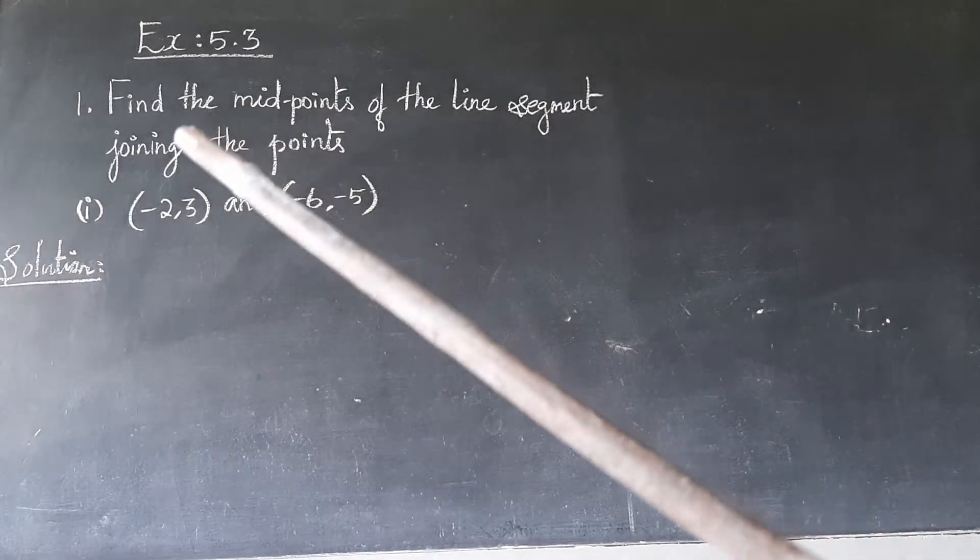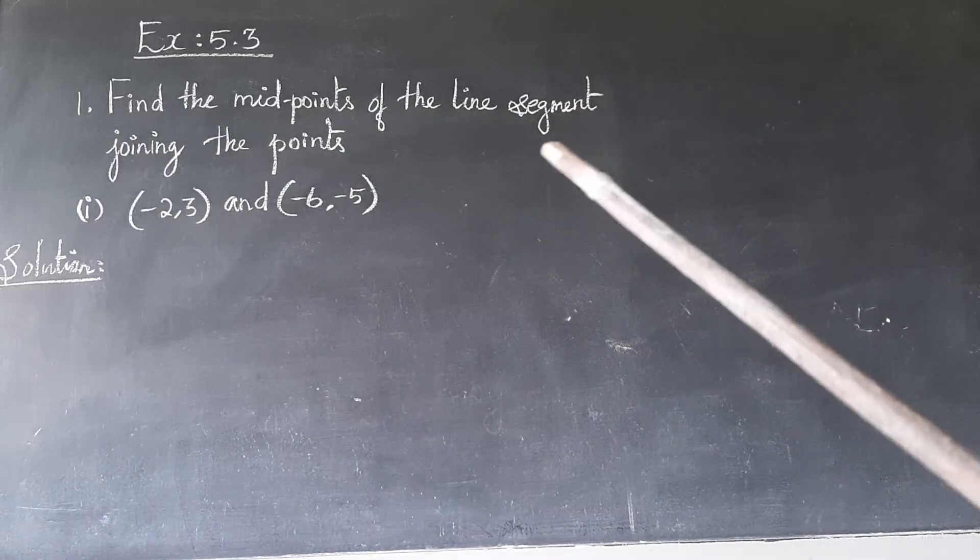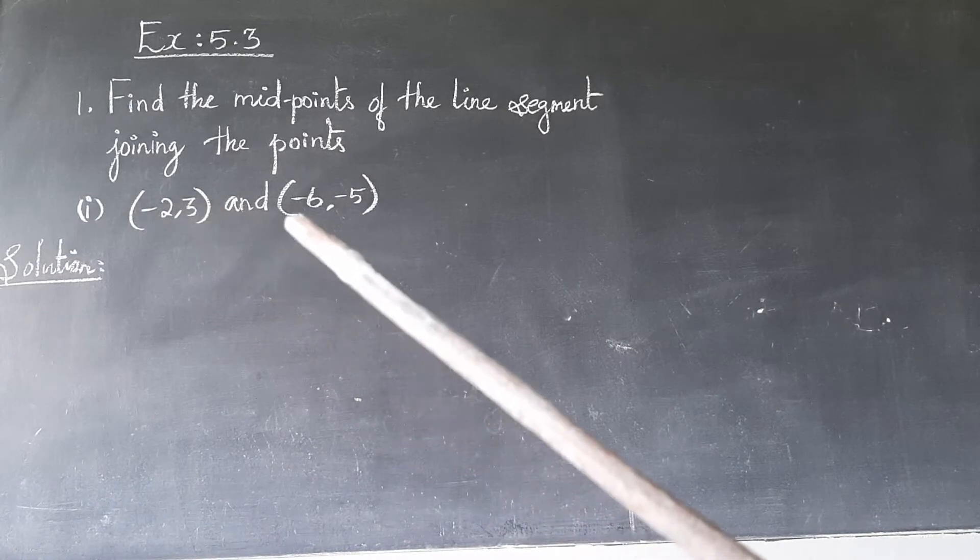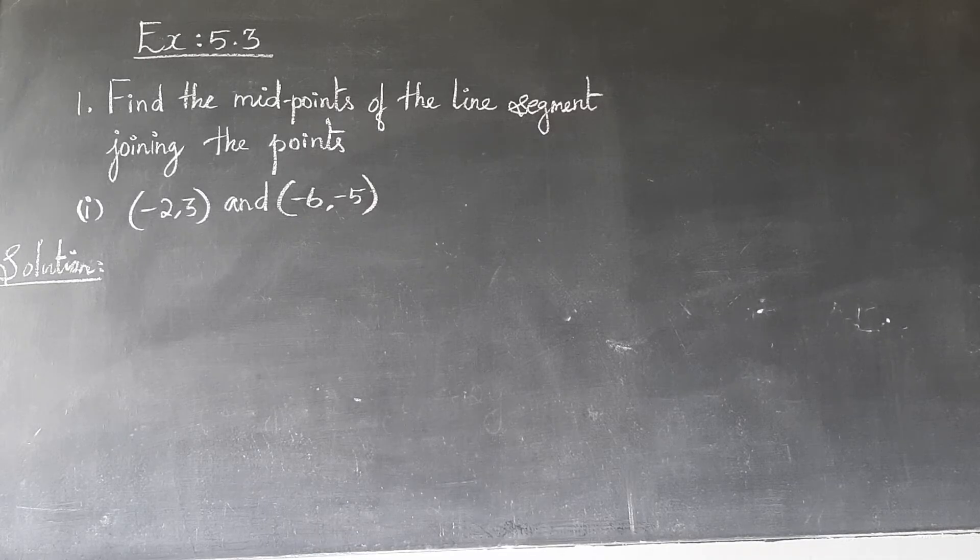Exercise 5.3. First sum: find the midpoint of the line segment joining the points (-2, 3) and (-6, -5). Okay, let's write the formula.